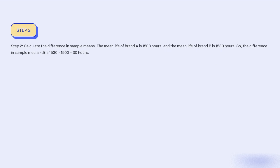Step 2: Calculate the difference in sample means. The mean life of brand A is 1500 hours and the mean life of brand B is 1530 hours. So the difference in sample means D is 1530 minus 1500, equal to 30 hours.